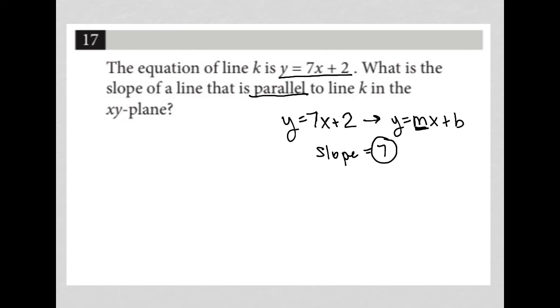So if we know the slope is 7 for line K, then any line parallel to line K will also have a slope of 7. So our answer to this question is 7.